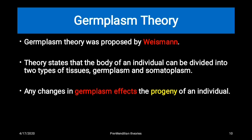The germplasm theory was proposed by Weismann. According to him, the body of an individual is comprised of two types of tissues: somatoplasm and germplasm. Somatoplasm is related to vegetative characters, while germplasm is related to genetical characters. He further stated that changes in germplasm affect the progeny of the individual.